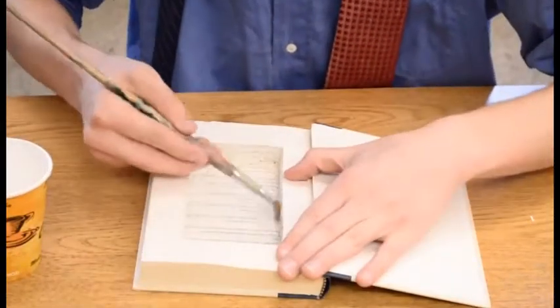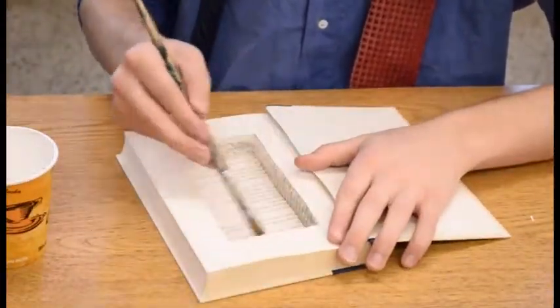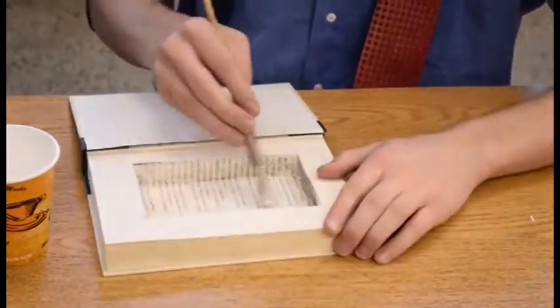When you are finished cutting the pages, brush the watered glue solution on the inside of the hole. Close the book and let it dry for about 25 minutes with pressure applied on top.